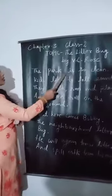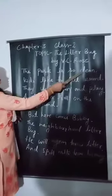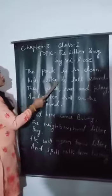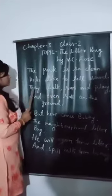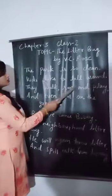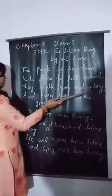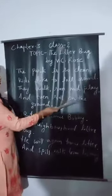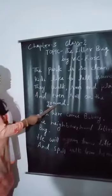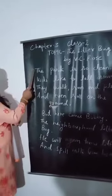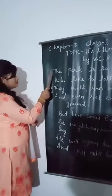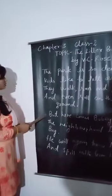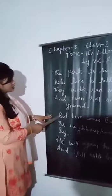The park is so clean. Kids like to loll around. They walk, run and play, and even roll on the ground. Now, this is the first para of this poem. I am going to explain the second para of this poem.